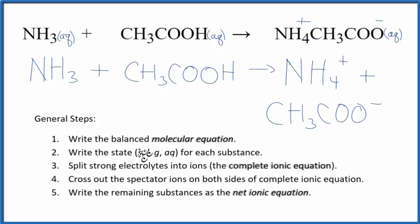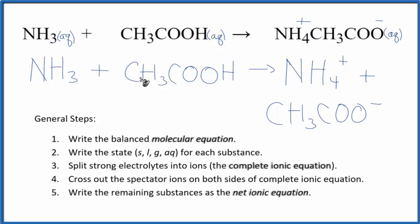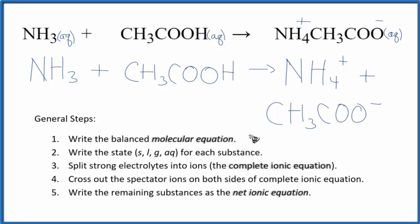We split the strong electrolytes into their ions and left the ammonia and acetic acid alone because they're weak electrolytes. Now we can cross out spectator ions — those are on both sides of the complete ionic equation. In this case, there's nothing that's the same on both sides; each substance is unique. So the complete ionic equation is the same as the net ionic equation.